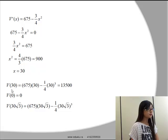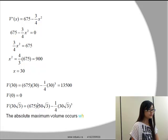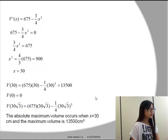X is equal to 30 will be our critical point, and we have to find the corresponding y value for this x value. But other than that, we also have to check the endpoints, the endpoints being 0 and 30 times the square root of 3. When we check the y value for all of these three, we have to compare them and see which one is the largest. And when x is equal to 30, we get the largest y value possible.